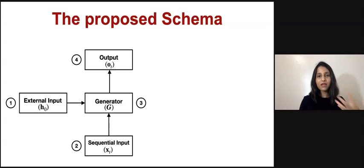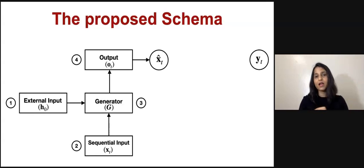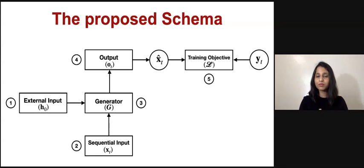Fourth module is the output space. Once the output state is projected over the vocabulary space to generate the token x hat t, x hat t is compared with y_t, and we can choose how we want to compare these two. So the fifth module is the training objective module.